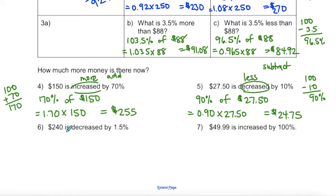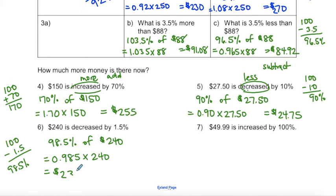Example number six. $240 is decreased by 1.5%. So my original amount is 100%. I'm subtracting because it's decreased 1.5%. So I'm looking for 98.5% of my number. So I want 98.5% of $240, which is the same as taking 0.985 and multiplying that by 240. And that gives me a final answer of 236.4. But because I'm dealing with money, I need to include that zero at the end to make 40 cents.